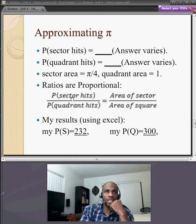The probability of sector hits over the probability of quadrant hits, since they're random, is approximately equal to the area of the sector over the area of the quadrant.